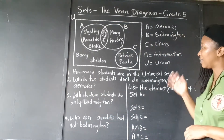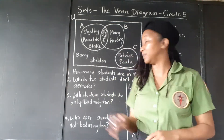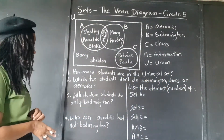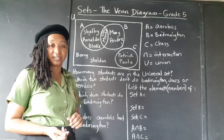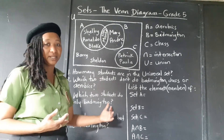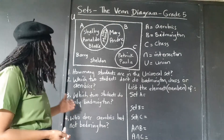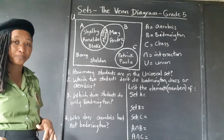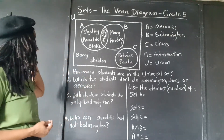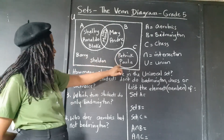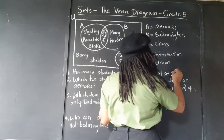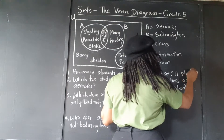We're going to use the information in the Venn diagram to answer these questions. The first question asks: how many students are in the universal set? It's asking for an actual number, not to list the elements. So we count: 1, 2, 3, 4, 5, 6, 7, 8, 9, 10, 11 students. 11 students are in the universal set.